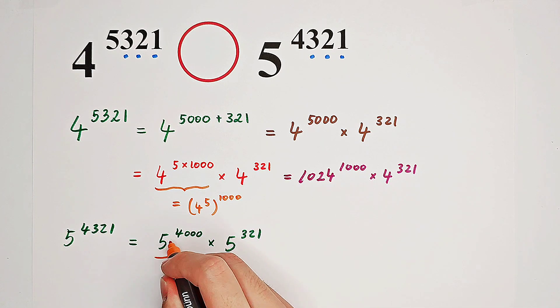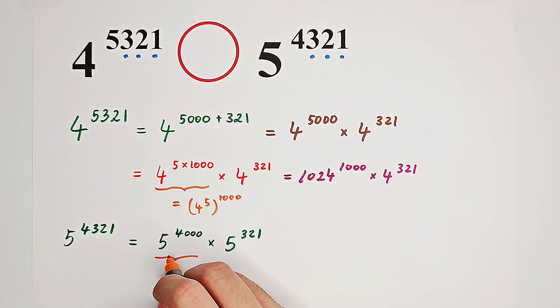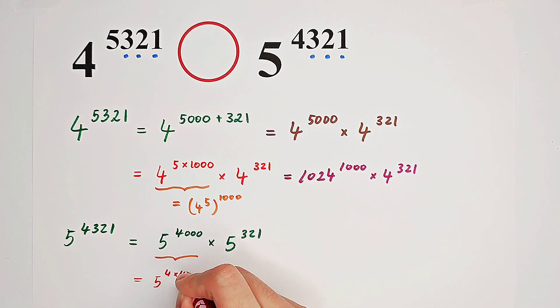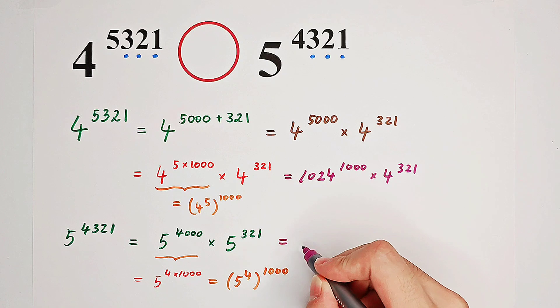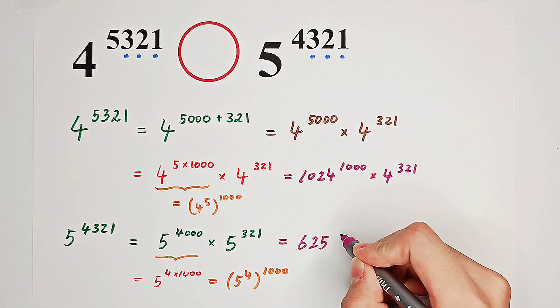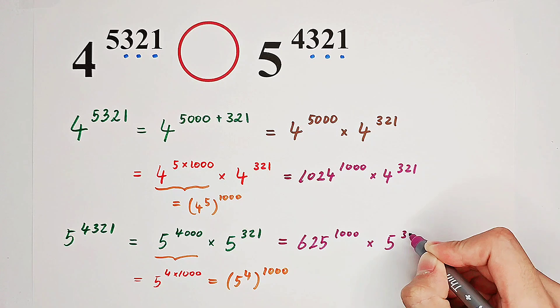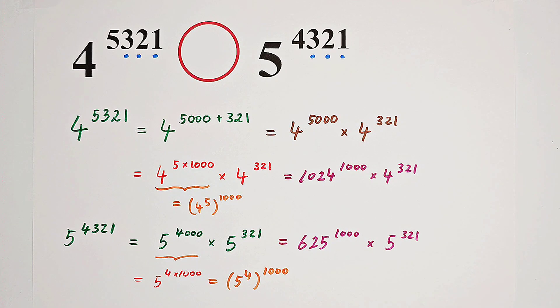We do the same thing, 4,000 is 4 times 1,000. So it is 5 to the power of 4 times 1,000, which is equal to 5 to the power of 4, all to the power of 1,000. 5 to the power of 4 is 625, then to the power of 1,000, then times 5 to the power of 321.